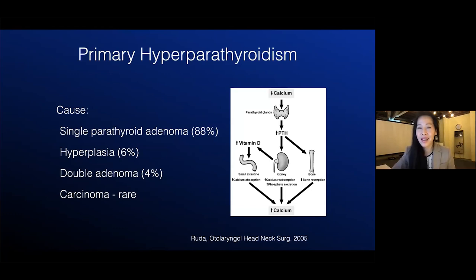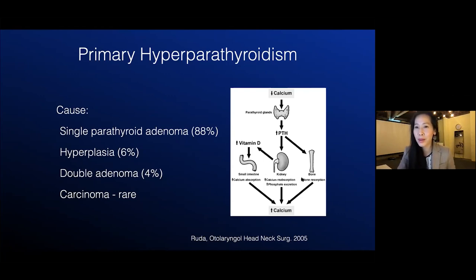I went back to the books and this is what I found. The whole reason we're doing 4DCT is to look for the cause of primary hyperparathyroidism. This is the over-secretion of parathyroid hormone leading to hypercalcemia and resulting in some pretty nasty systemic effects to the GI system, the kidneys, the bones, and also to the patient's mental health.